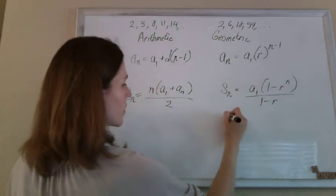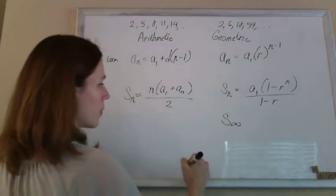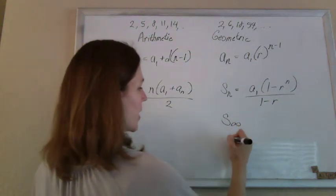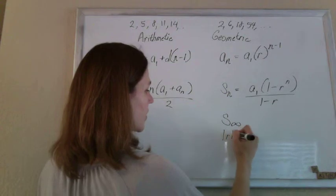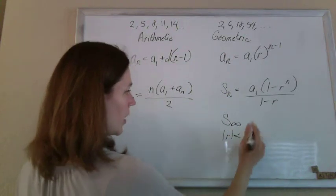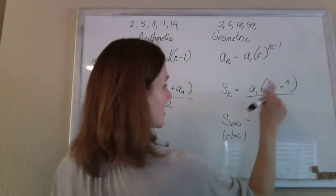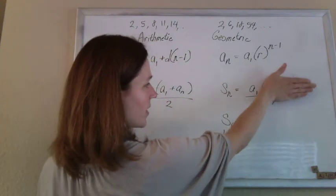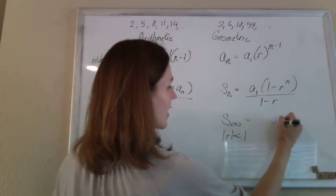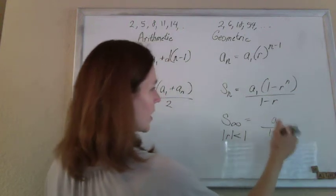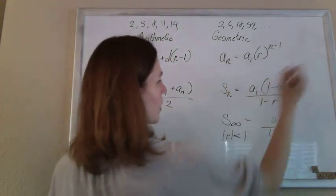There's one more formula. You can actually add an infinite number of terms if it's geometric, and only if the common ratio is less than 1. You can say that the sum of an infinite number of terms is this same thing without this part. So it's actually easier to just a sub 1 over 1 minus r. Just chuck that part and you've got it.